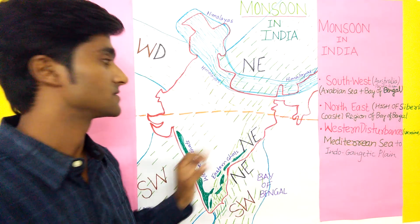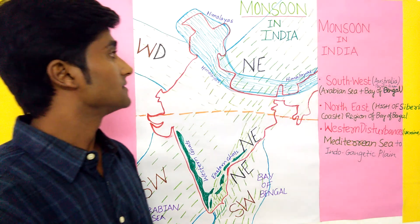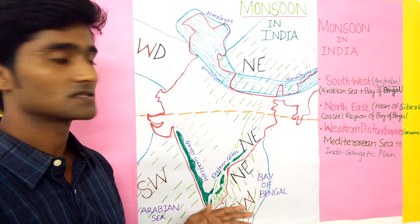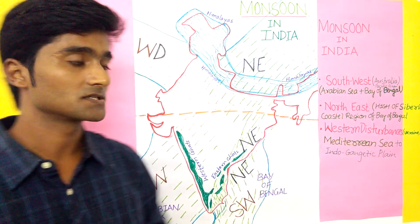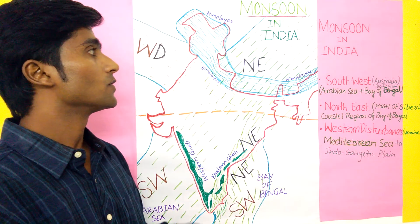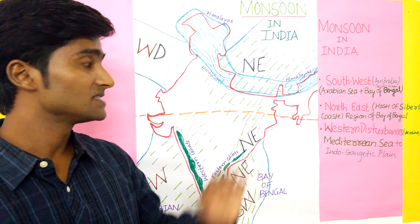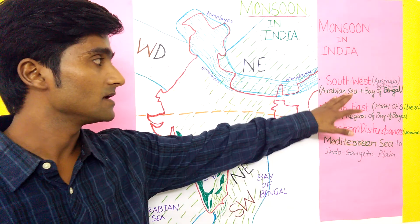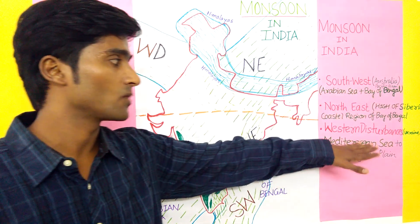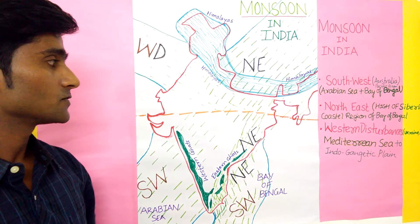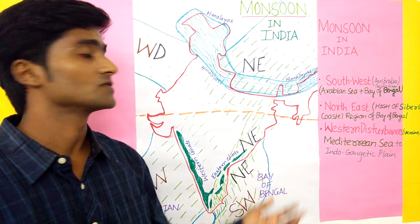In this entire session I covered the Southwest monsoon, Northeast monsoon, and Western disturbance. The main point is to understand what the monsoons of India are. Basically there are three main monsoons in India — Southwest, Northeast, and Western disturbance.